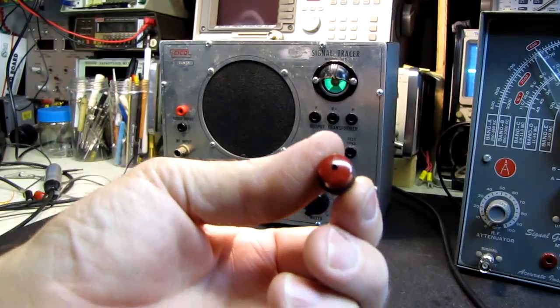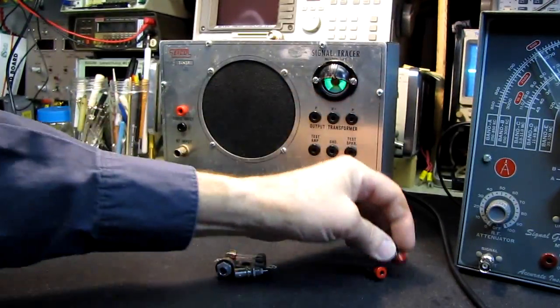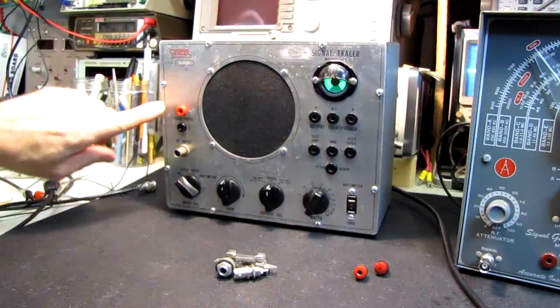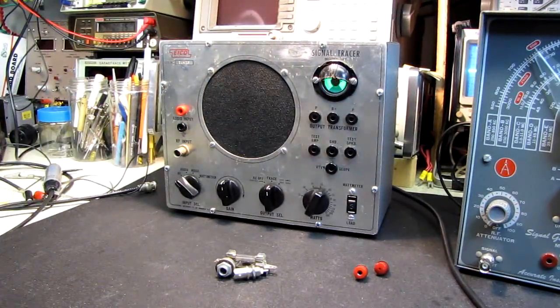You remove the pin jack, you put the banana jack in there, you haven't ruined the resale value at all. Keep these in a bag, you can reinstall them or sell them along with the unit to the next owner when you get rid of it. However, now I can use standard test leads.